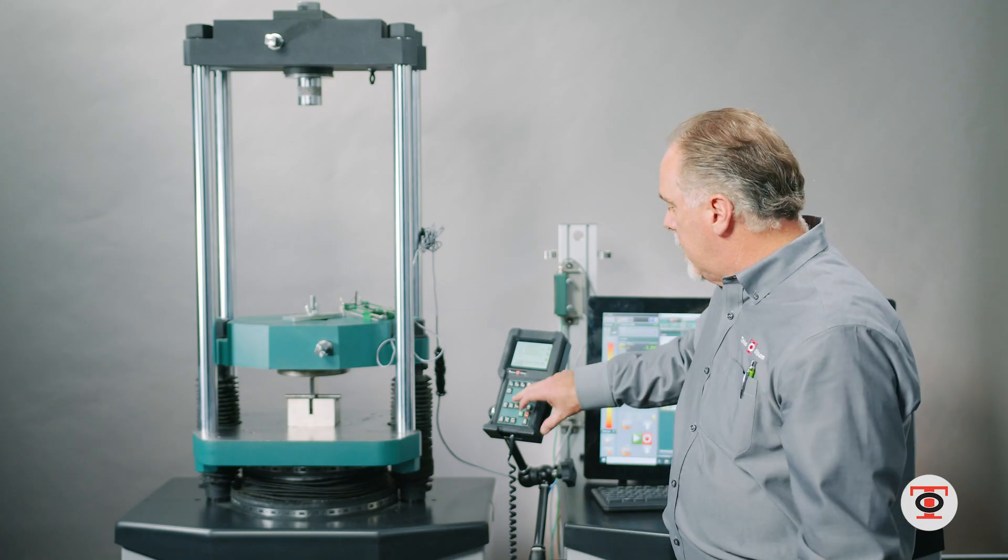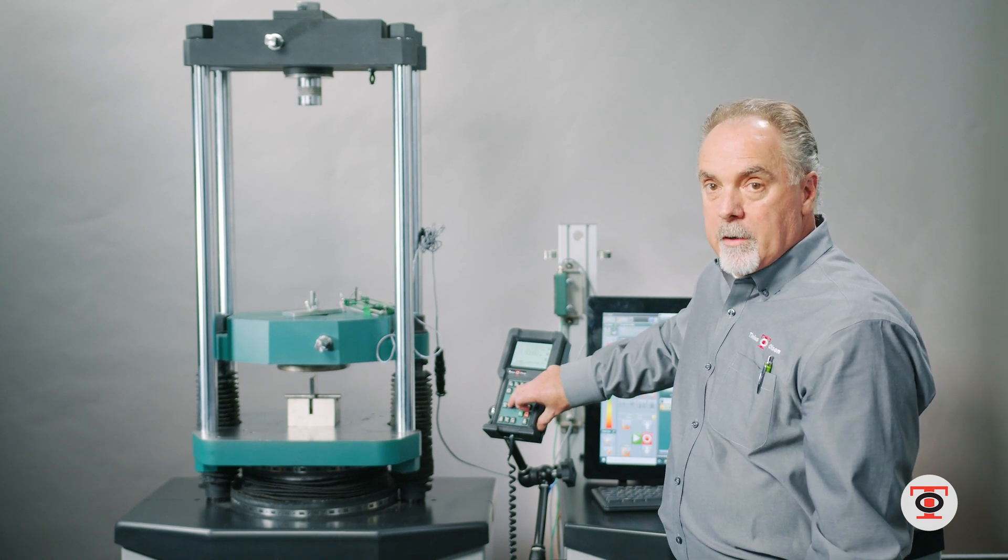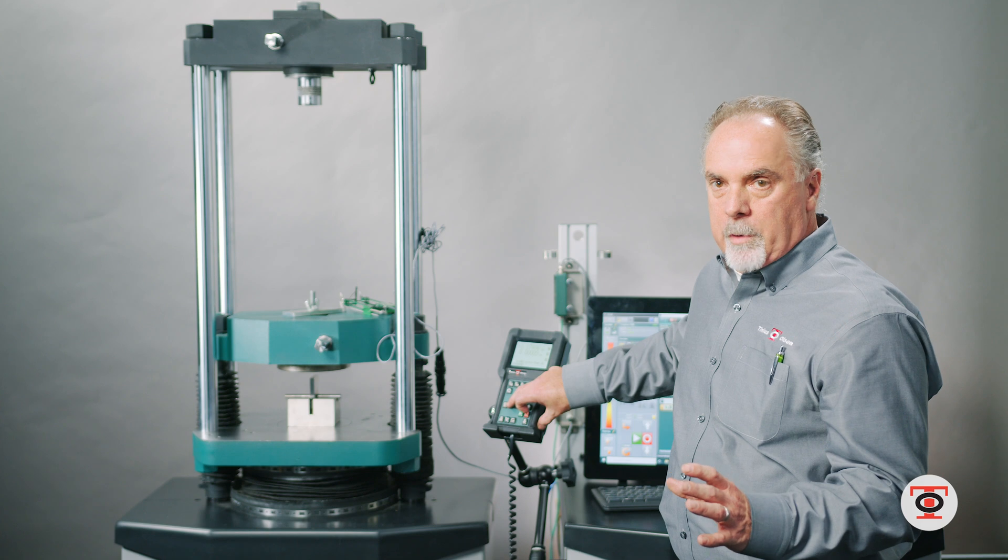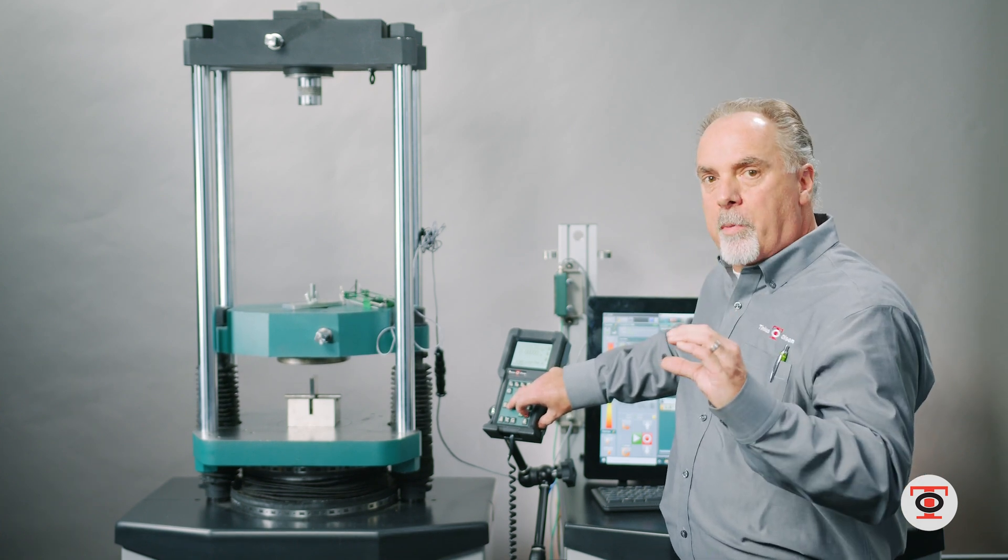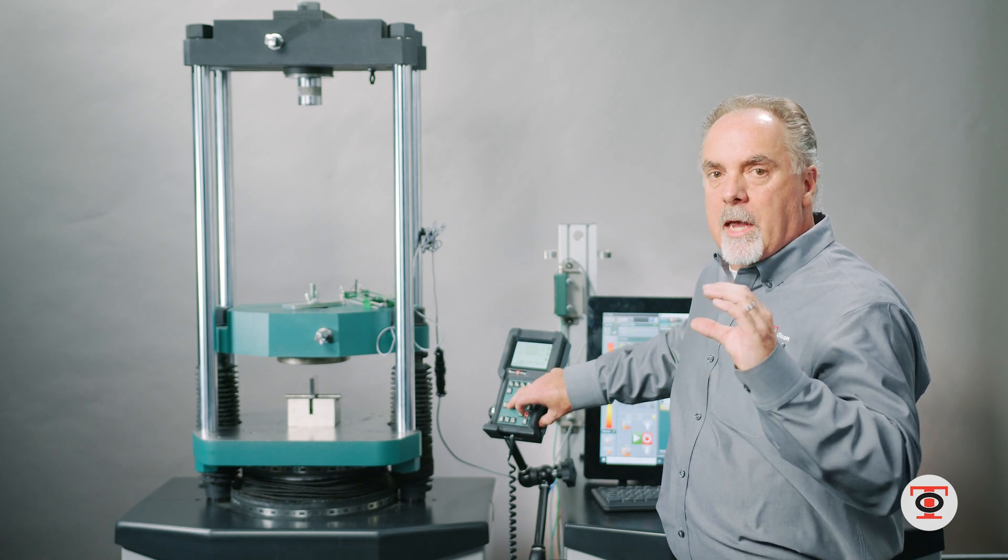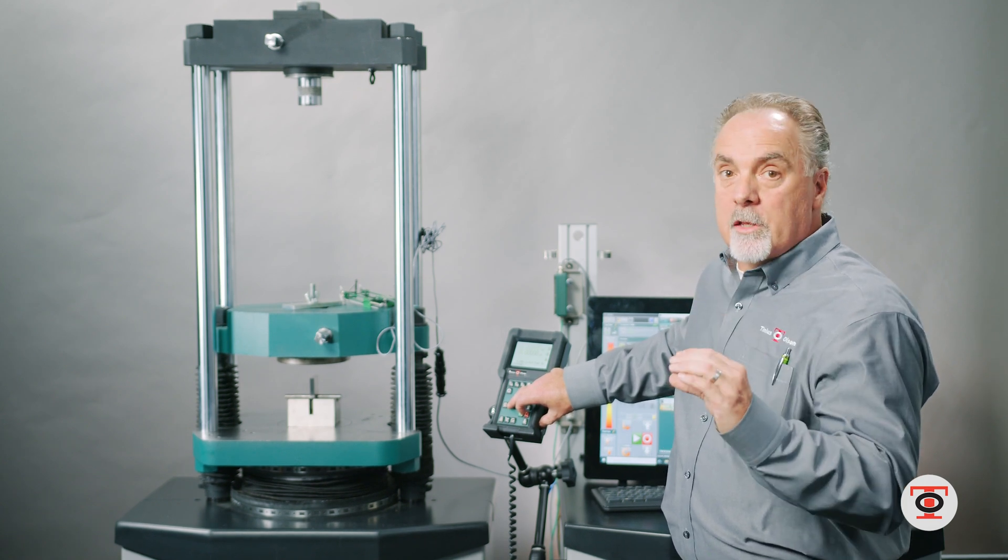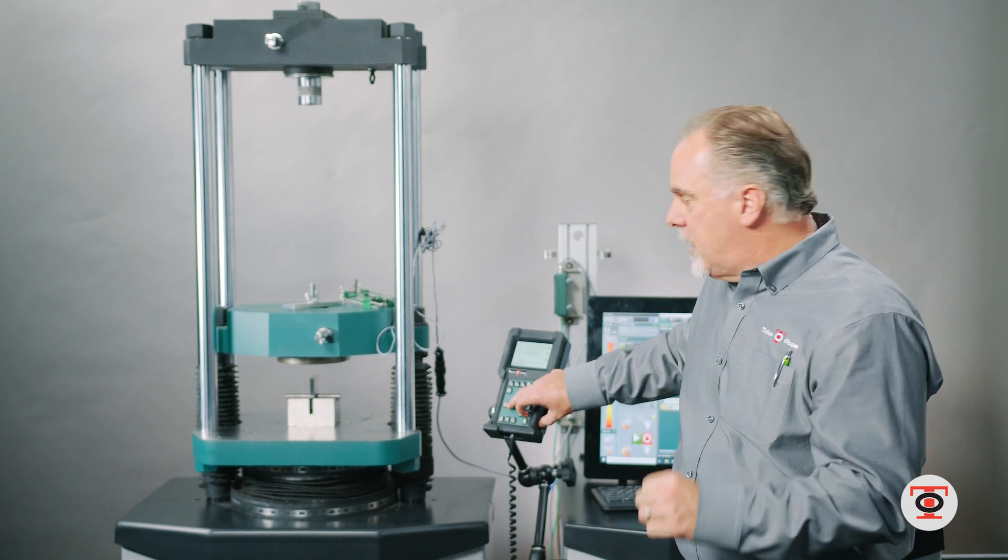This crosshead has the ability to go up and down 20 inches a minute. So that's what I call a coarse adjustment. If I'm going 20 inches a minute, I can get it close to the part, but I don't want to use that crosshead to get so it's touching the part because you could overload the crosshead and then you have to lower the piston down.